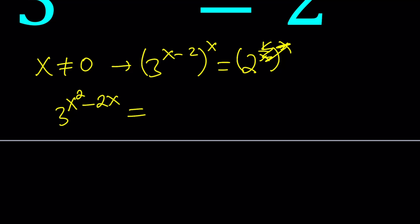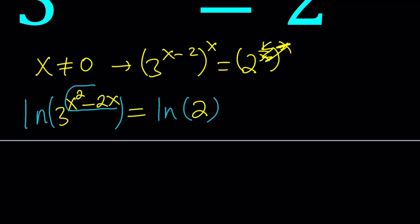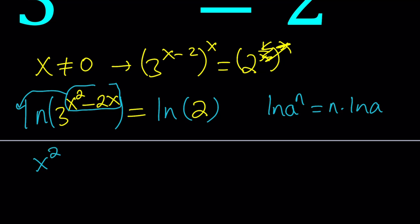I'm going to go ahead and take the natural log of both sides — ln this side and ln this side. You don't have to use parentheses, but it just makes it a little nicer. Now we're going to move the exponent to the front, because properties of logs allow you to write ln a to the power n as n times ln a. Of course, a must be positive. So here we get x squared minus 2x times ln 3 equals ln 2.